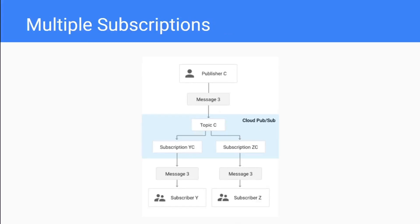Sometimes we might have multiple subscriptions attached to a topic. When this happens, if a publisher sends a message to a topic with multiple subscriptions, each of those subscriptions will take a copy of that message and send it to one of their subscribers. This is useful if you're trying to branch off at a point in a pipeline or want to take a message and send it to multiple agents - you can create multiple subscriptions on the same topic to do that.